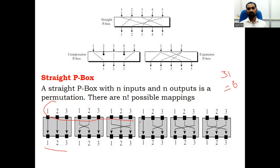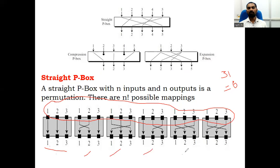Observe that the input is the same, but how we rearrange the N bits is different — giving six possible rearrangements. All P-boxes generally are keyless. They do not depend upon the key. They depend upon the size — how many input bits we are giving. These P-boxes can be implemented as hardwired or by using software.